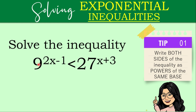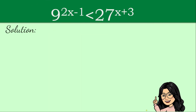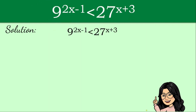Since 9 is 3 times 3, that's 3 squared, we can write it as 3 squared. And 27 is also with a base of 3 — that's 3 times 3 times 3, which is 3 cubed. So let's copy that given and express 9 and 27 with base 3. We now have 3 squared and 3 cubed, with the exponents 2x minus 1 and x plus 3 copied over.